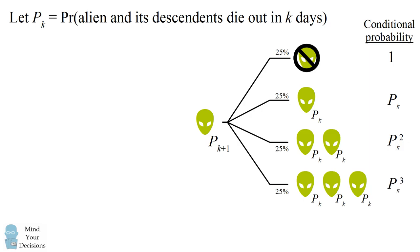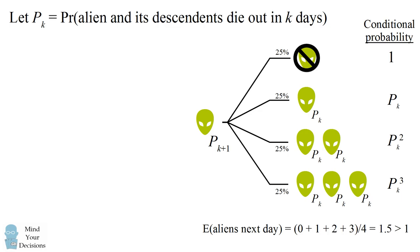Notice that the expected number of aliens the next day is 0 plus 1 plus 2 plus 3, all divided by 4, which equals 1.5 — greater than 1. That means the alien is more than replicating itself on average, so we can expect there's a chance the aliens would survive. Therefore, the probability of extinction should not be equal to 1; it should be less than 1.